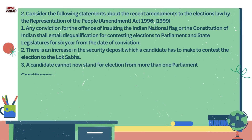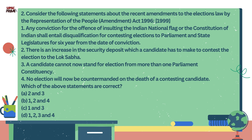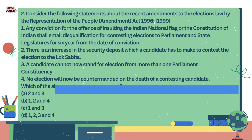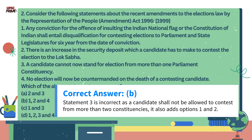Question number 2. Consider the following statements about the recent amendments to the election laws by the Representation of People's Amendment Act 1996. 1. Any conviction for the offence of insulting the Indian national flag or the constitution of India shall entail disqualification for contesting elections to Parliament and state legislatures for six years from the date of conviction. 2. There is an increase in the security deposit which a candidate has to make to contest the election of Lok Sabha. 3. A candidate cannot now stand for election from more than one Parliament constituency. 4. No election will now be countermanded on the death of a contesting candidate. Which of the above statements are correct? The correct answer is option B. Statement 3 is incorrect as a candidate shall not be allowed to contest from more than two constituencies.